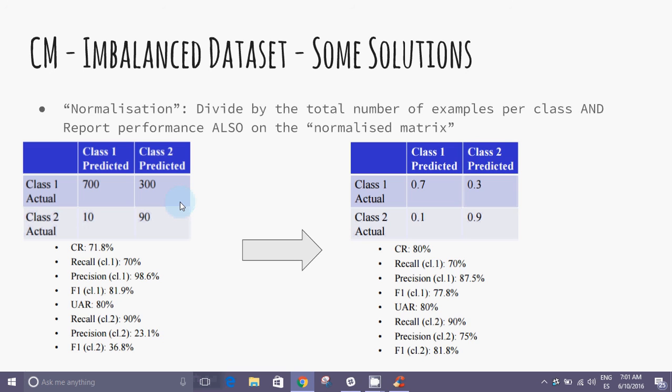One solution may be normalization: divide by the total number of examples per class and report performance. We can also see the difference in the results before and after normalization.